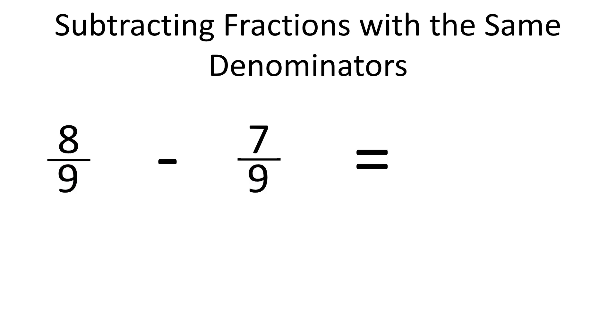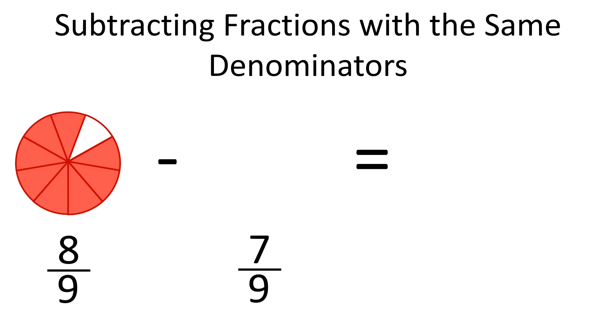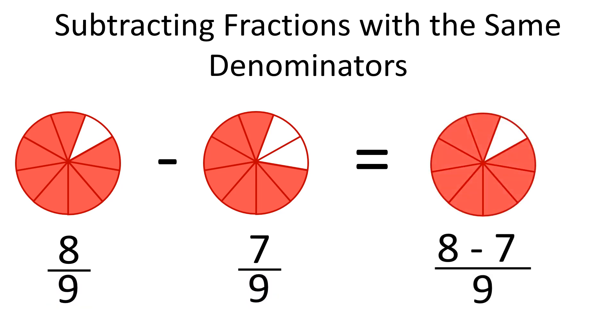One more example. How much is 8 over 9 minus 7 over 9? As denominators are the same, we only subtract number of parts in numerators. So from 8 parts, we subtract 7 parts, leaving with 1 part from a total of 9 equal parts, or 1 ninth.